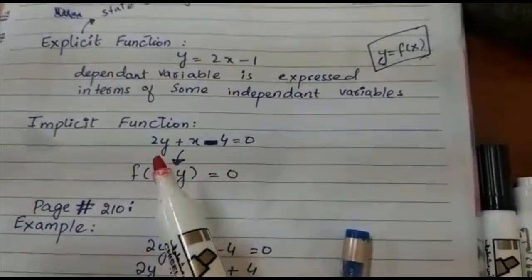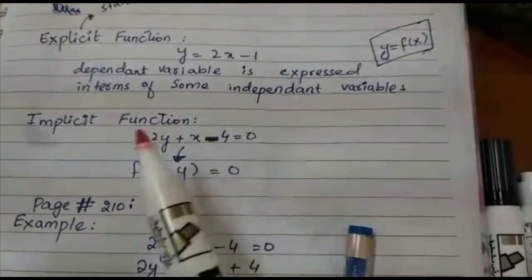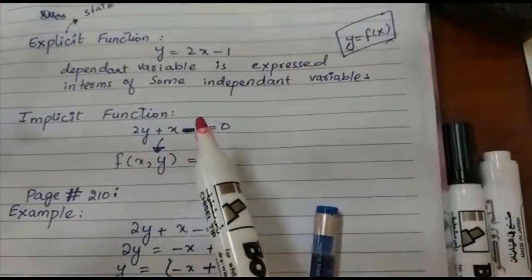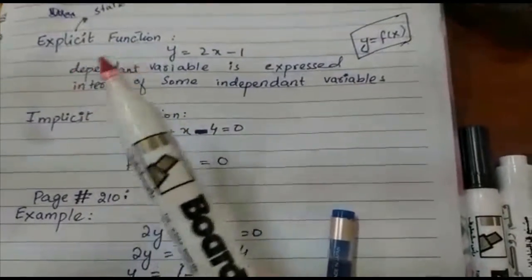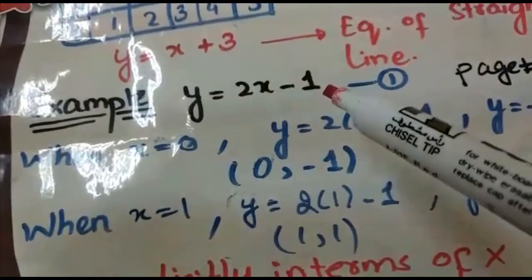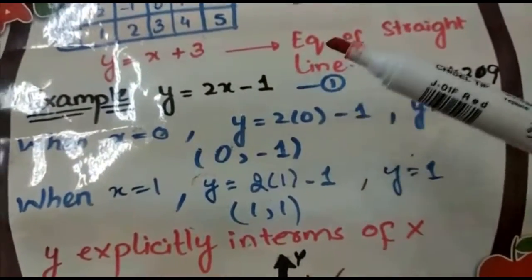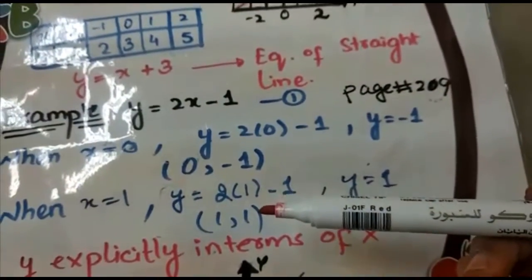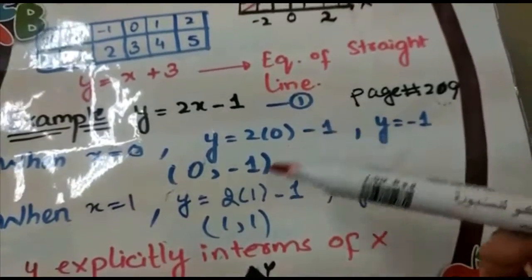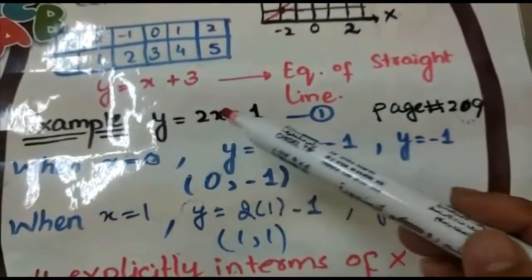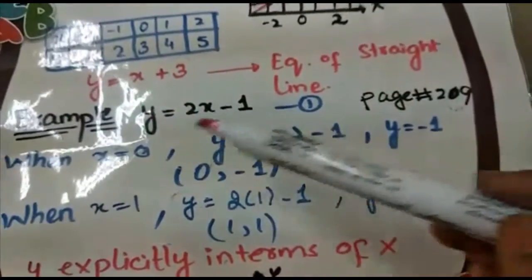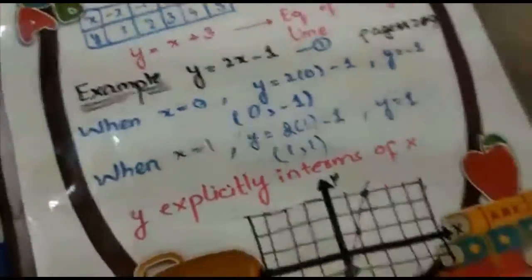For an implicit function like 2y + x - 4 = 0, there is no clear representation for y — y and x are mixed together. When we need to find the value of y, we convert the implicit function to an explicit function. Now for y = 2x - 1, pause the video, think, and tell me: is this implicit or explicit? It is an explicit function, because y is on one side and there is no x mixed with y.